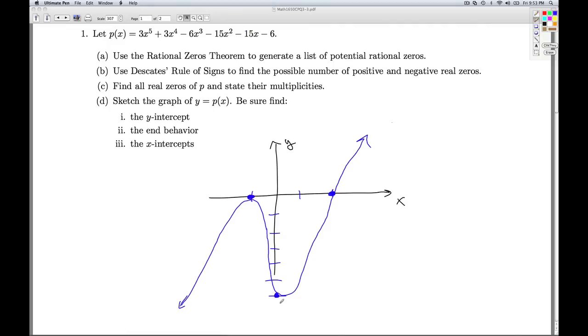Where's this relative minimum? We don't know. We would need calculus or the calculator, or we need to plot more points to find that out. But based on our information, that's a pretty decent graph. That'll do it for number 1.